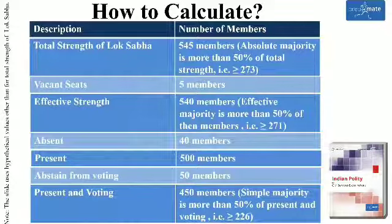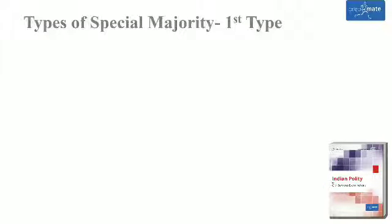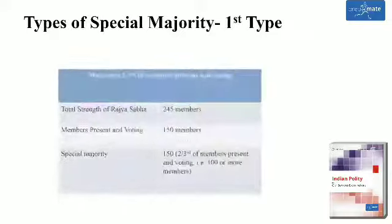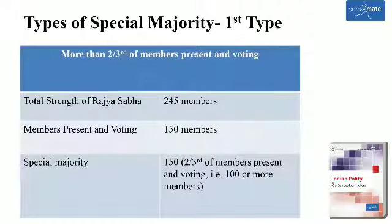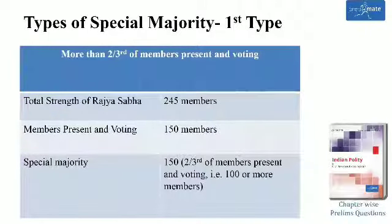Let us understand special majority. Special majority is of three types. First type: more than two-third of the members present and voting. For example, the total strength of Lok Sabha is 245 members. Suppose 150 members are present and voting. Then the special majority required to pass the resolution is two-third of the members present and voting, that is 100 or more.